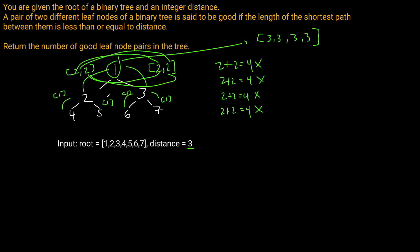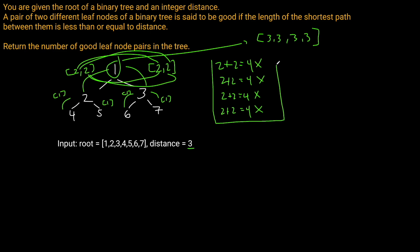As you can see, this is a post-order traversal through the tree because we process the left children first before processing the current node. That's the approach we want to take for this problem — a variation of a post-order traversal. We check that all elements in the left list plus all elements in the right list are less than or equal to the distance, and if they are, we increment our good leaf count. It may be a little confusing, but let's go into the code.